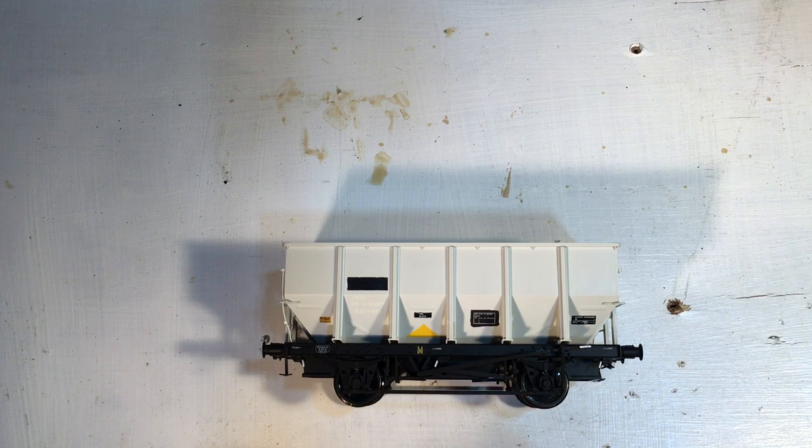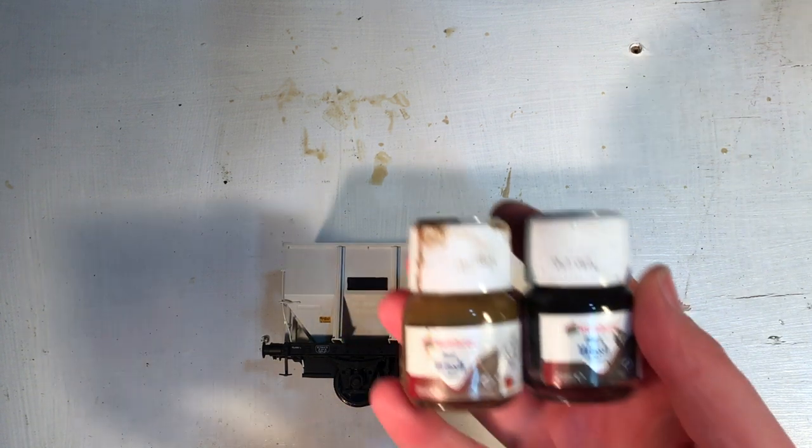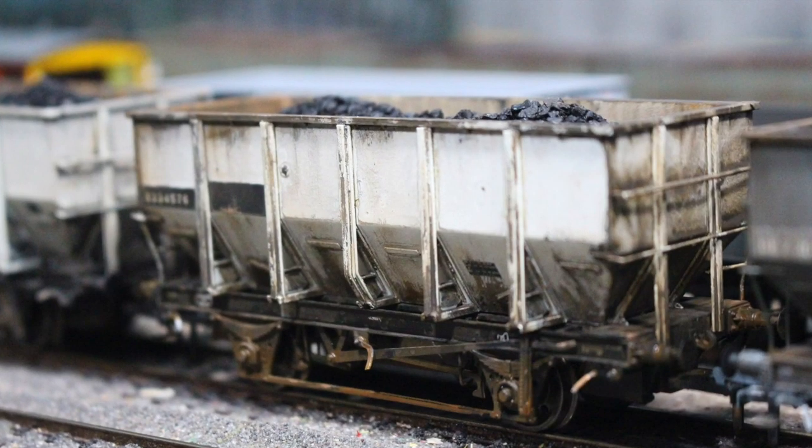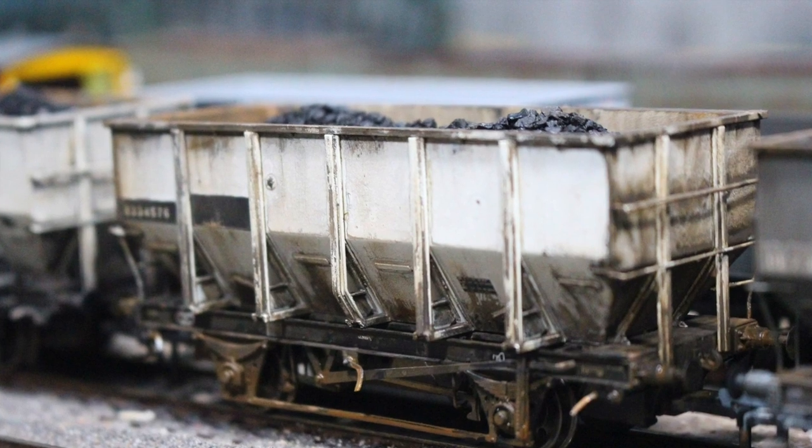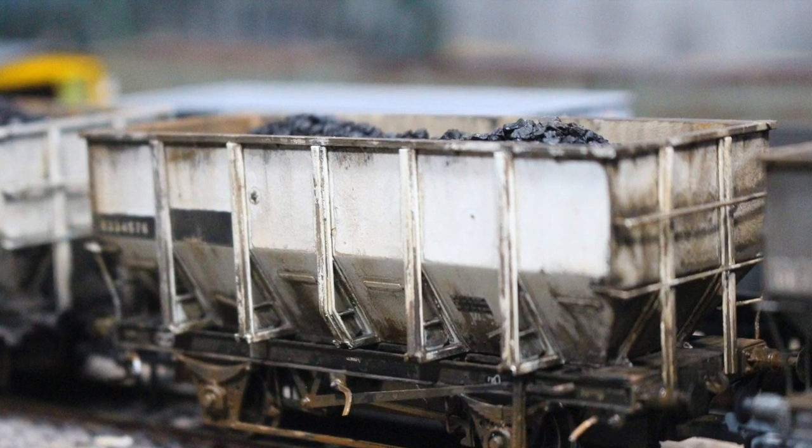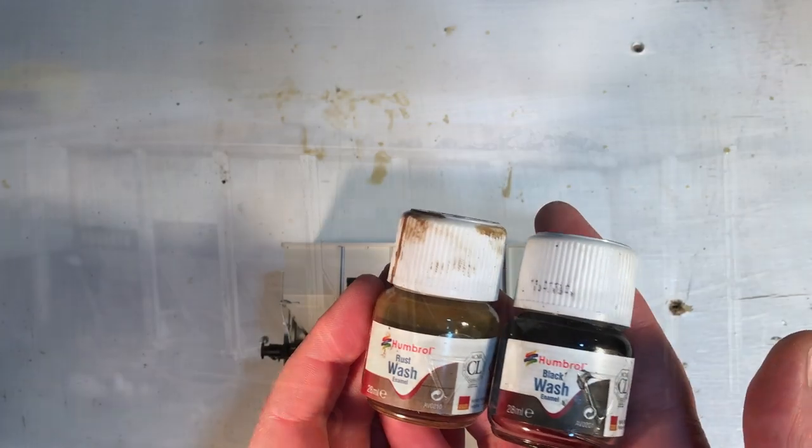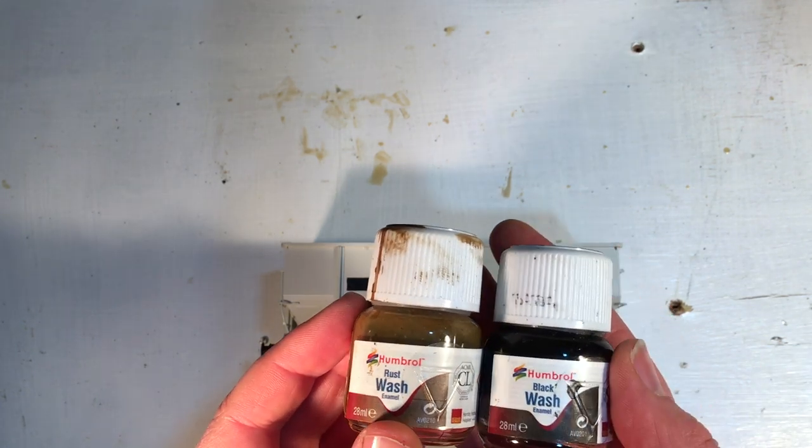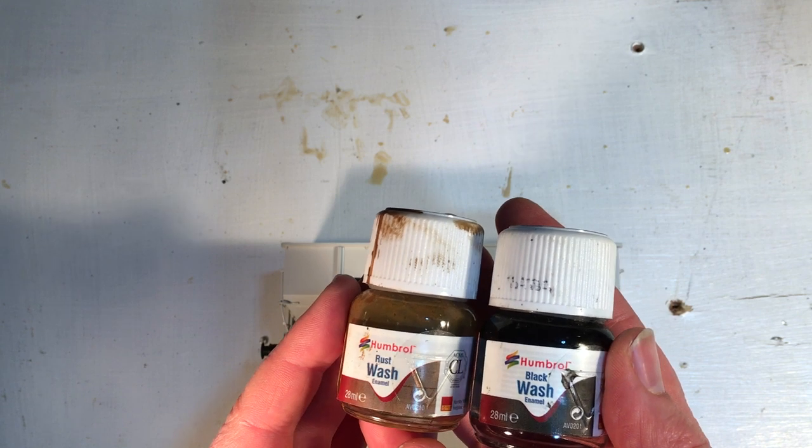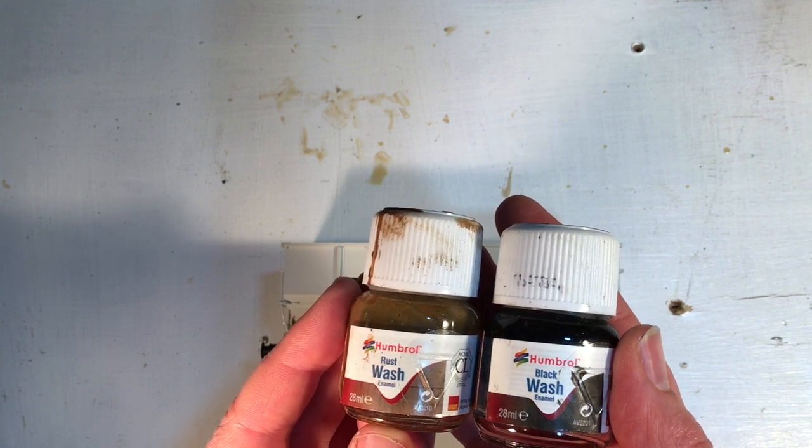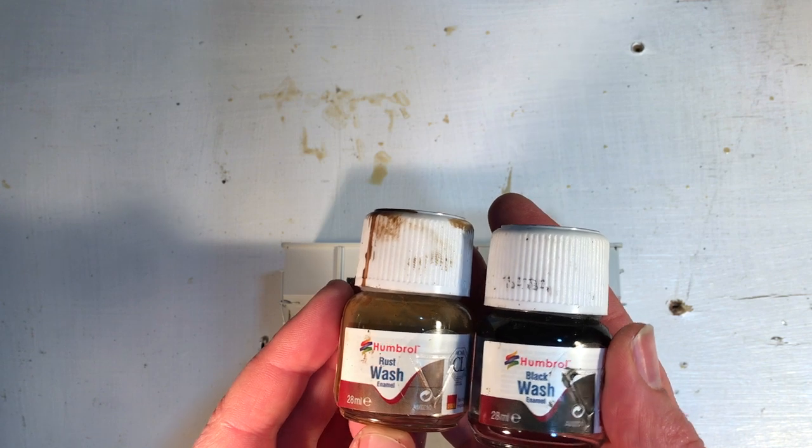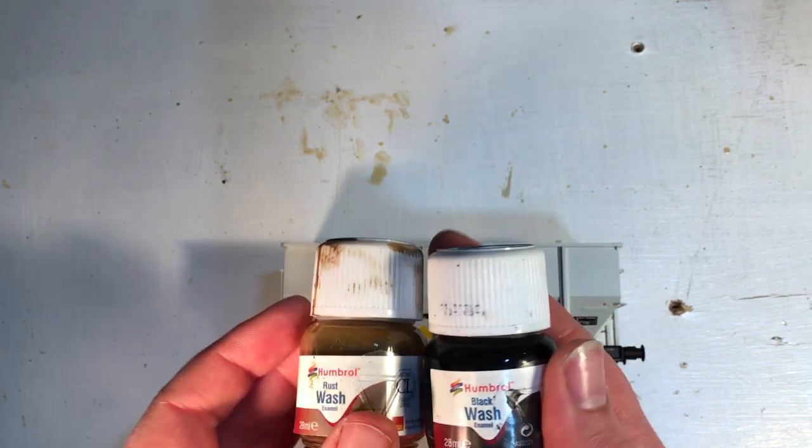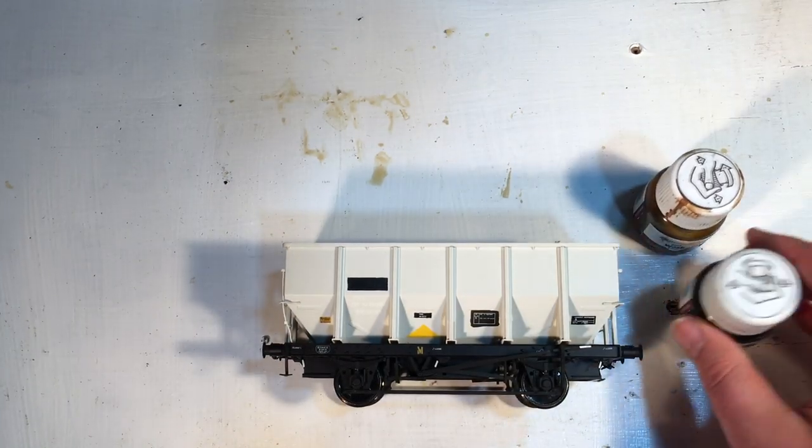So what I tend to use for weathering are the Humbrol rust wash and the black wash. I've got both here, well used. I used these on the Double O gauge weathering video and they're really good actually. They're kind of just like gone-off paint in suspension is the best way to describe them. What I tend to do sometimes, as these get a little bit chunky near the bottom, it's quite easy to syringe in a little bit of white spirit just to thin them down a little bit. But we're good to go with these.